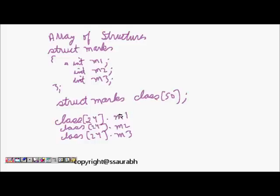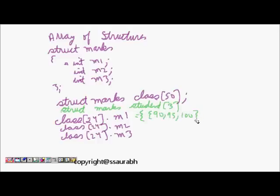And then if I make it a little smaller and let's say I define struct marks student 3. So I can even in fact initialize this smaller version. So I can say 90, 95, 100, so good student, then 70, 75, 80.